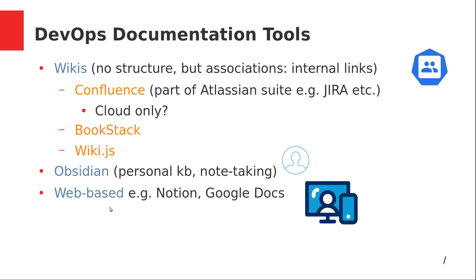Then you've got web-based tools, which I don't really consider documentation tools, but they can do documentation among many other things. Notion — I'm sure everybody knows about it. And then you've even got Google Docs, which is like Microsoft Office but Google's version. You can share documents, multiple people can edit, but it's kind of old school. Notion is a lot more modern and powerful. It also lets you publish documents as a static website. But I would rather go with a wiki, to be honest.